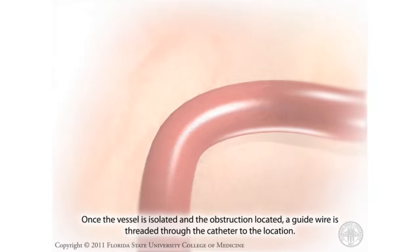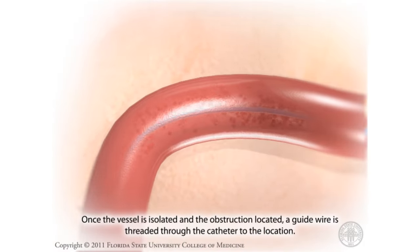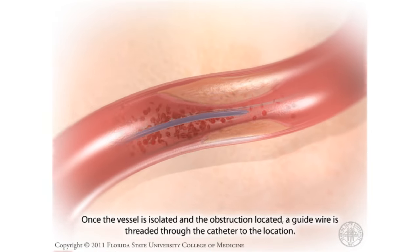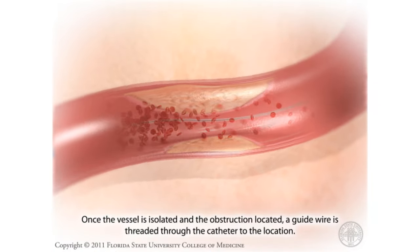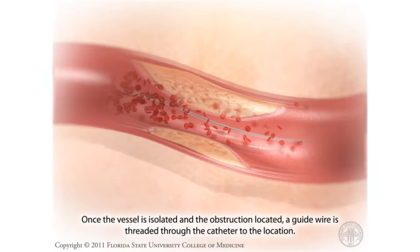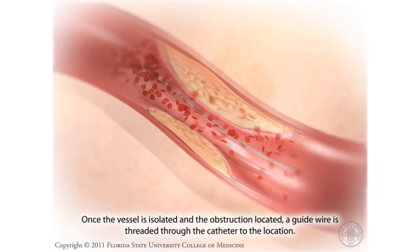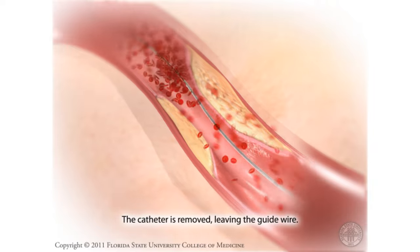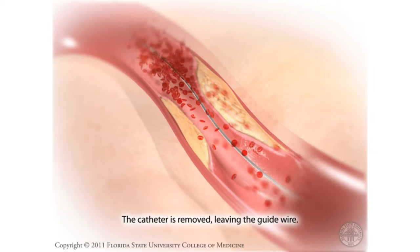Once the vessel is isolated and the obstruction located, a guide wire is threaded through the catheter to the location. The catheter is removed, leaving the guide wire.